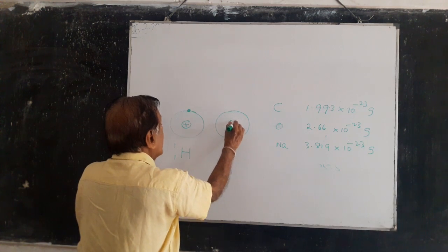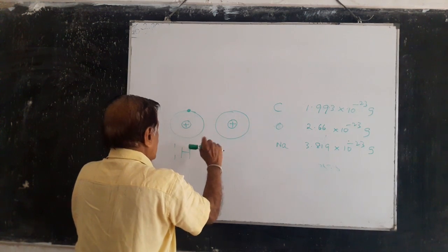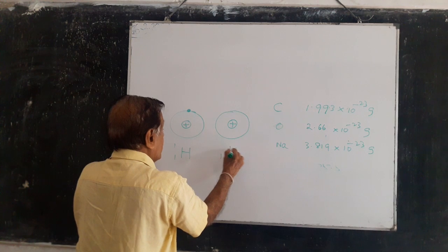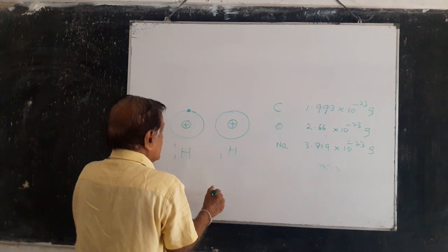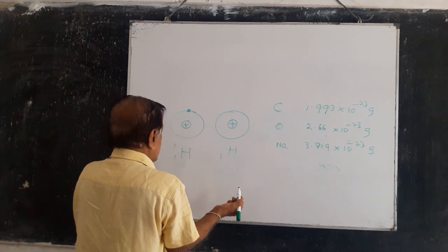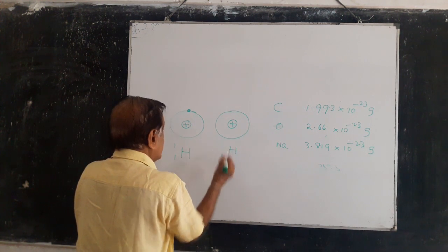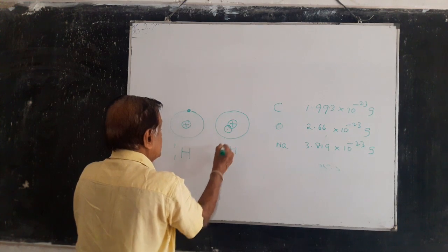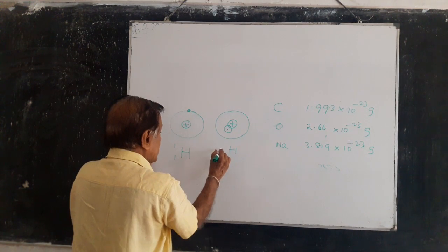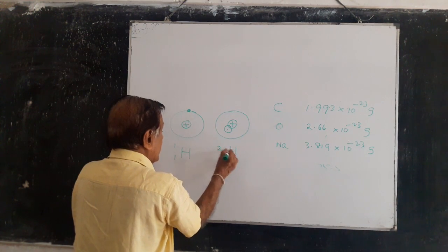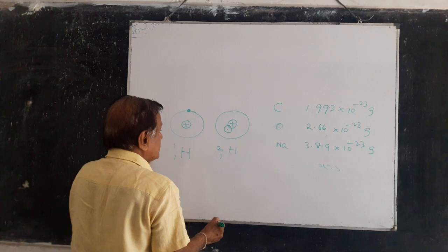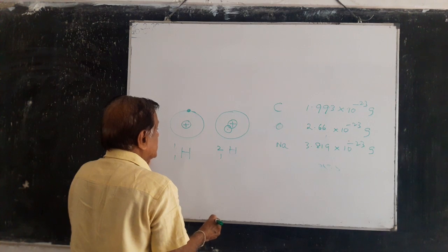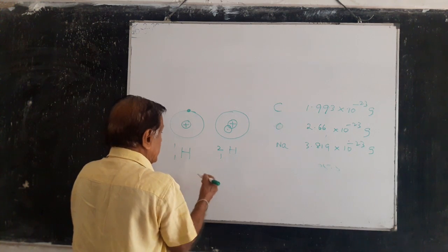In some hydrogen atoms, you have one proton, one electron, and one neutron also. The mass number is two — ¹H₂. This is called deuterium.